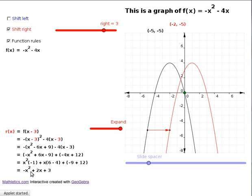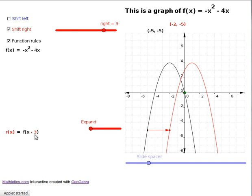You simplify that all out and you end up with a new rule for r of x. You'd be pretty clever if you could look at the rule for r of x and the rule for f of x and say they were related — it's not obvious. But it is clear if you draw the graphs, because this red one is the graph of r of x and the black one is the graph of f of x. You can see they're the same shape; the red one has been shifted three units to the right. So if you're moving your function three units to the right, you just put x minus 3 into the old rule.